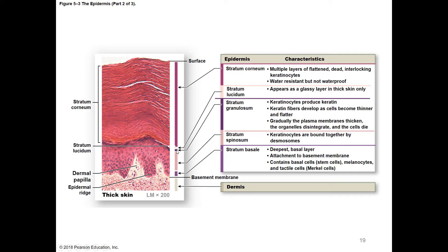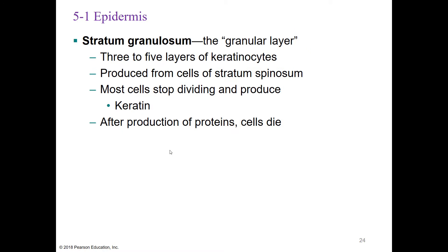Moving up to the stratum granulosum—the granular layer—it contains three to five layers of keratinocytes produced from the cells of the spinosum. Most of these cells stop dividing and begin to produce keratin, our water-resistant protein. After these cells produce the protein, the cells begin to die. As we move closer to the top of the skin, the cells are dead—and this is good because this top layer of skin is our protection layer. Something that's dead can't be hurt, making it an excellent protectant.